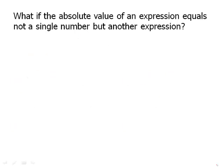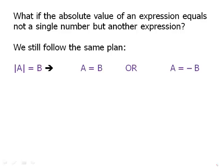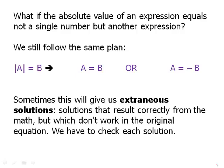What if the absolute value of an expression equals not a single number but another expression? This is actually the territory the test would ask us about. We still follow the same plan: |a| = b means a equals either positive b or negative b — the expression on the other side, or that expression with a negative sign in front. Sometimes this gives us extraneous solutions — solutions that result from correct math but don't work in the original equation. We have to check each solution. We'll see this again later with square roots.